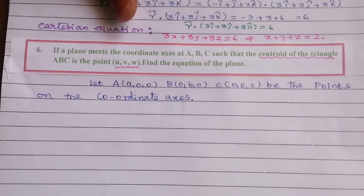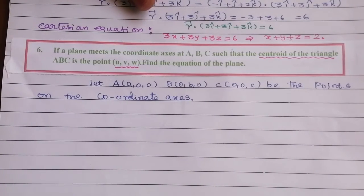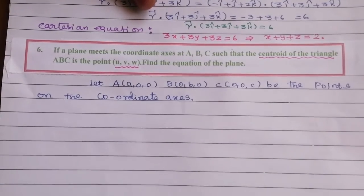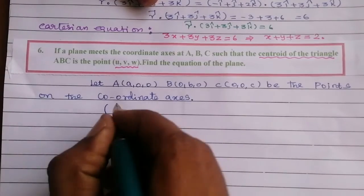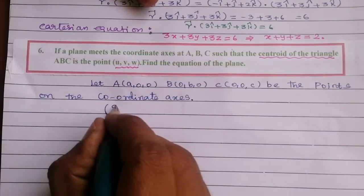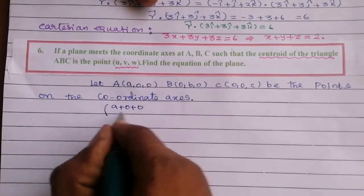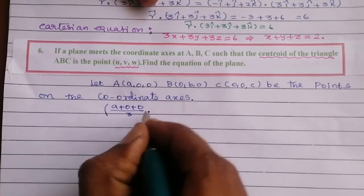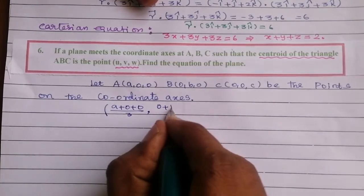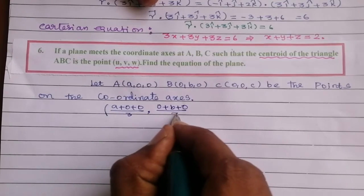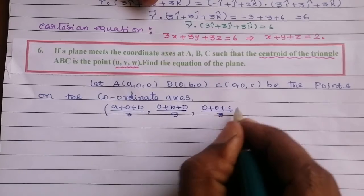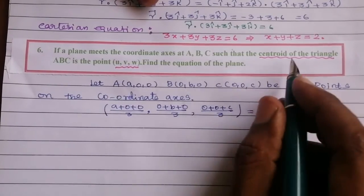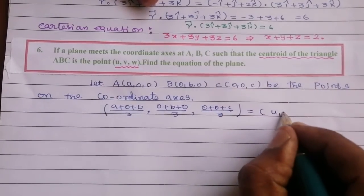The centroid formula gives: ((x₁+x₂+x₃)/3, (y₁+y₂+y₃)/3, (z₁+z₂+z₃)/3). Applying this: (a+0+0)/3, (0+b+0)/3, (0+0+c)/3 equals the centroid (u, v, w).